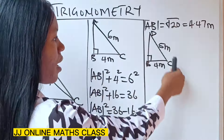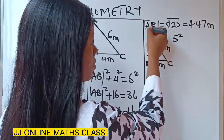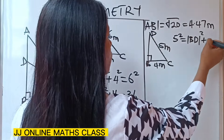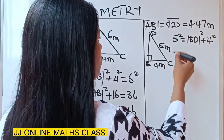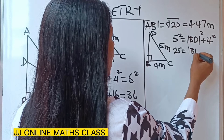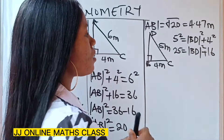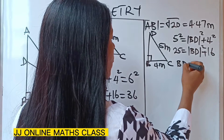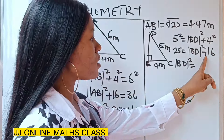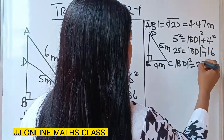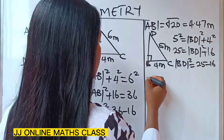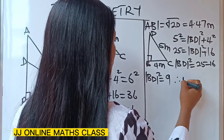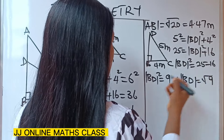This is our hypotenuse, so the hypotenuse squared — that is five squared — equals line BD squared plus line BC squared, and BC is four, so four squared. We have 25 equals BD squared plus 16. Since we are looking for BD squared, the 16 crosses over to become minus 16, so BD squared equals 25 minus 16, which gives us 9.